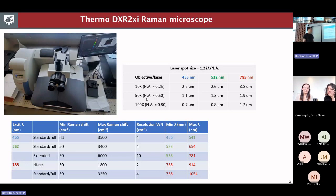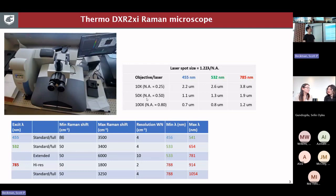We can see the luminescence signatures over a pretty broad range. I think there are maybe eight or ten rare earth elements that we could see within this range. And then depending on the objective we use, we can get down to a pretty small spot size, which is useful when we're doing mapping and trying to do some microstructural characterization.